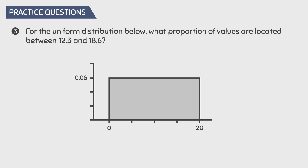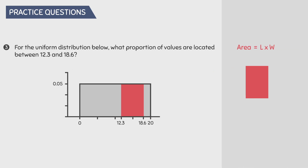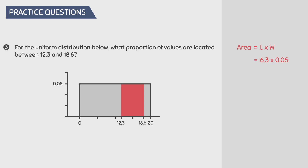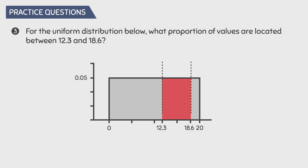Question number 3: for the uniform distribution below, what proportion of values are located between 12.3 and 18.6? On the graph, 12.3 and 18.6 mark our area of interest. The area of a rectangle is length times width. The length equals 18.6 minus 12.3, which gives us 6.3, and the width is 0.05. Multiplying these together gives 0.315, meaning the proportion of values within this interval is 0.315, or 31.5%.